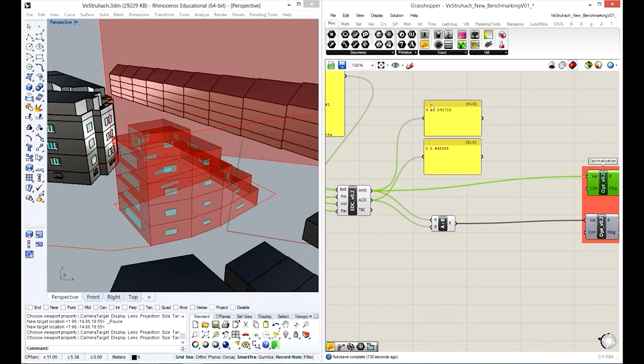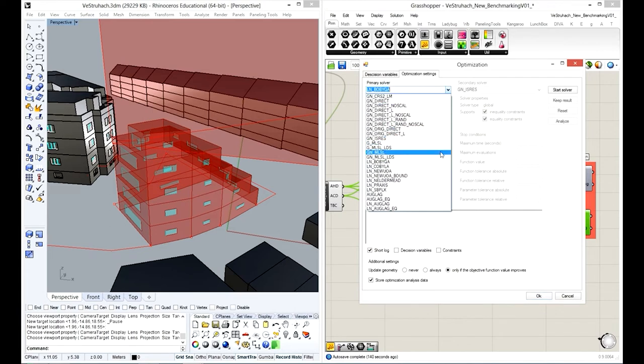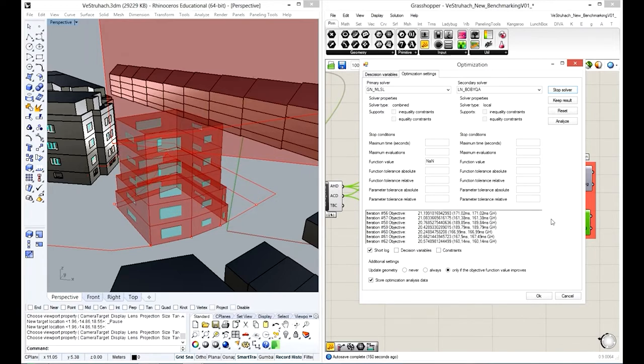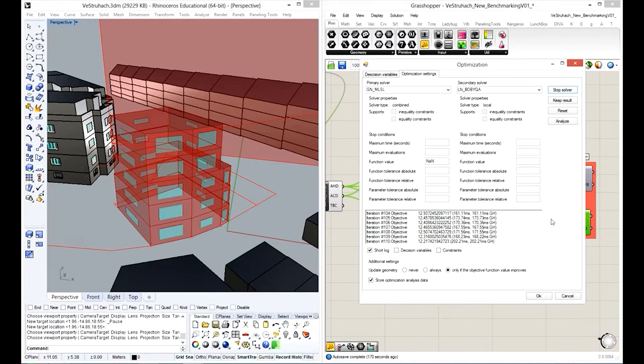Here's another example. This time, it's a rather conventional housing project, which was parametrized such that certain values like floor heights or the position on the plot were fixed, but window sizes or floor sizes could be changed within certain boundaries. Here you see the algorithm trying out and evaluating different versions in quick succession.